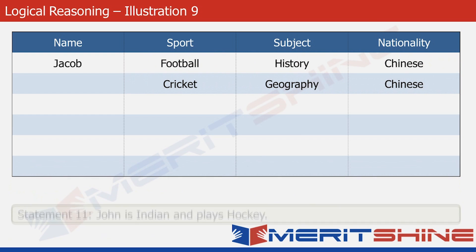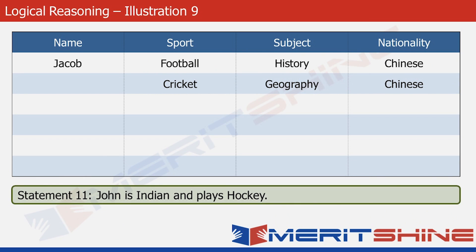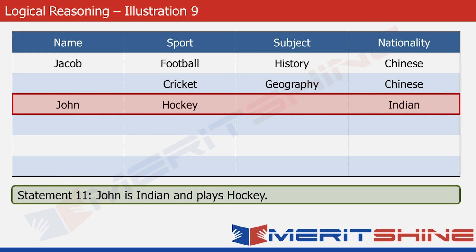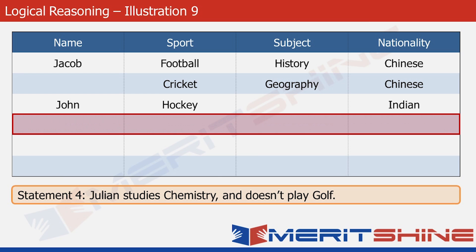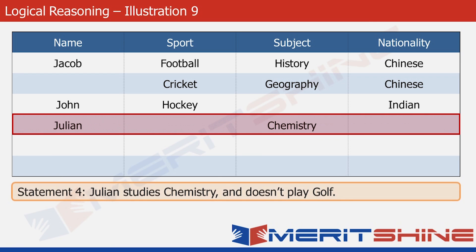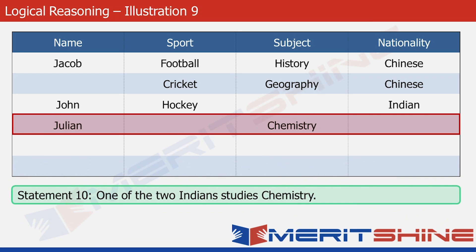Let's look at statement eleven. It says that John is Indian and he plays hockey — let's put this in the third row. Our next statement is statement four, which tells us that Julian studies chemistry — let's put this in the fourth row. The next statement is statement ten, which tells us that one of the two Indians studies chemistry. So Julian is Indian — let's write Indian in Julian's row and move forward.